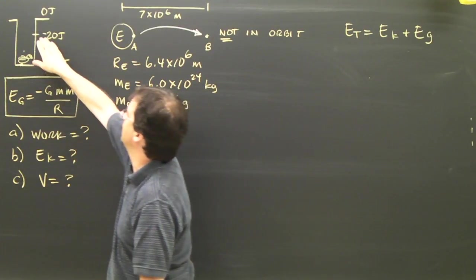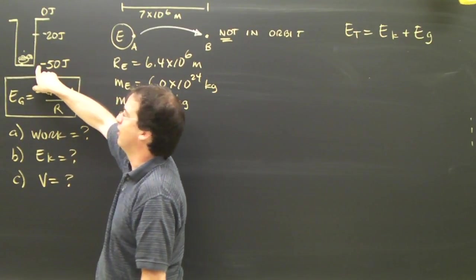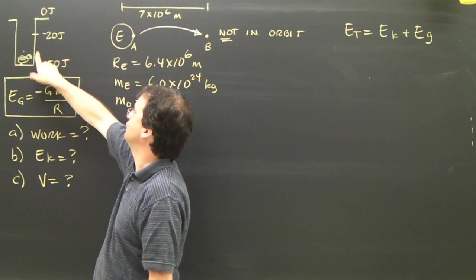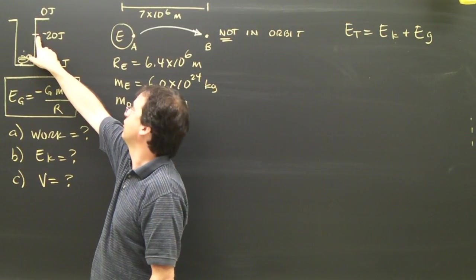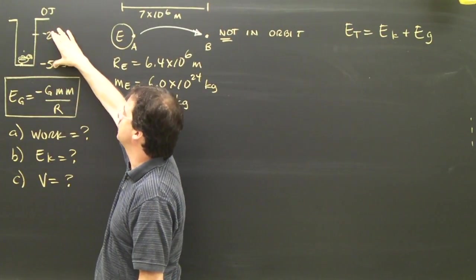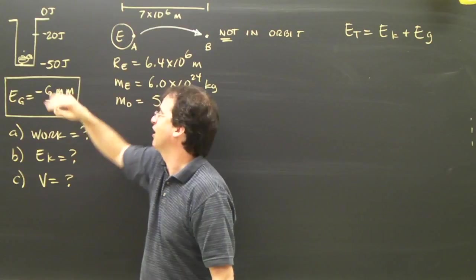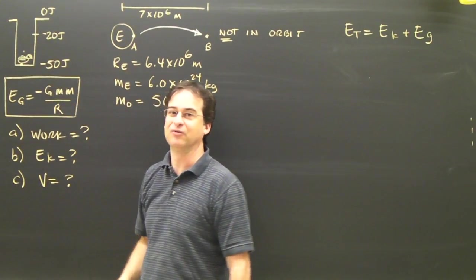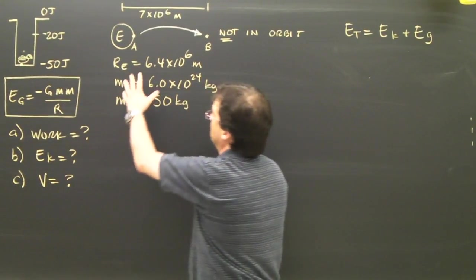Well, that's like going from maybe here to here. If I know the energy here is negative 50 and I know the energy there is negative 20, I know the difference between these two is 30. I have to add 30 joules to get from there to there.